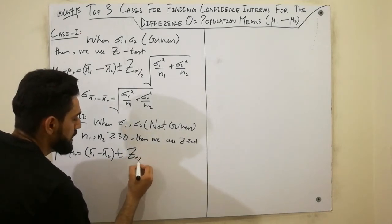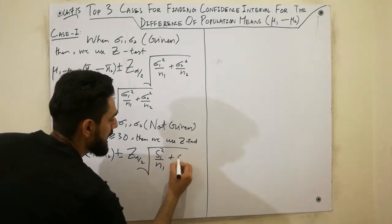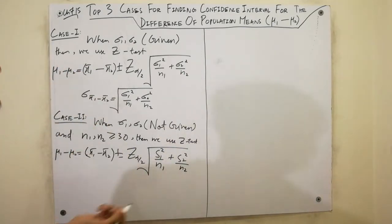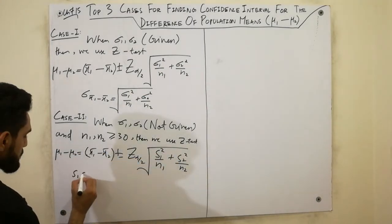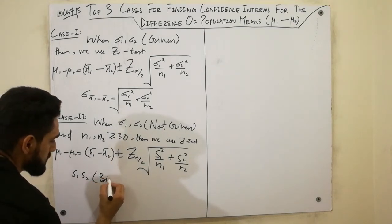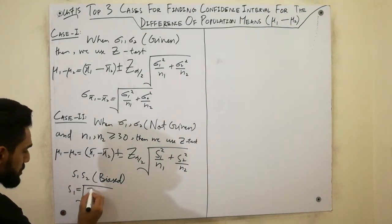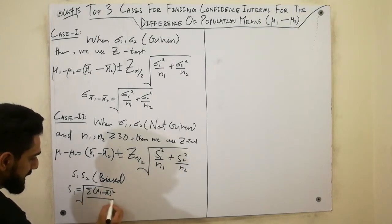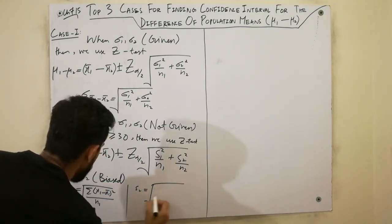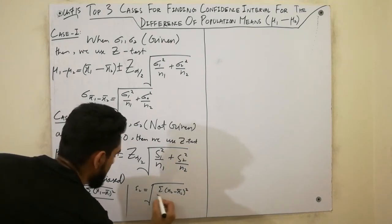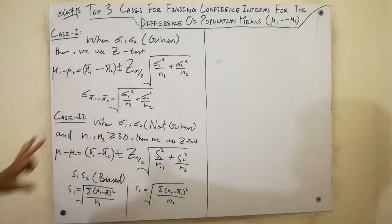...Z-alpha/2 times the square root of S1² divided by n1 plus S2² divided by n2. The key change here is that instead of σ1 and σ2, we use S1 and S2, which are the biased sample standard deviations. S1 equals the square root of the sum of (X1 minus X1-bar)² divided by n1, and S2 equals the square root of the sum of (X2 minus X2-bar)² divided by n2.